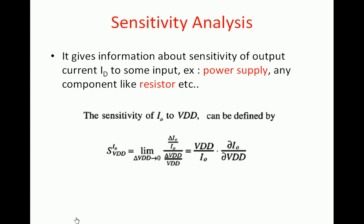Sensitivity analysis is the sensitivity of output current to how the output current responds to changes in input parameters. If we are concerned with power supply, the sensitivity of output current with respect to VDD can be defined as: S(I_out, VDD) = limit as delta_VDD tends to 0 of (delta_I_out / I_out) / (delta_VDD / VDD). When the limit is applied, the deltas convert to partial differentiations, giving the final expression for sensitivity of I_out to VDD.